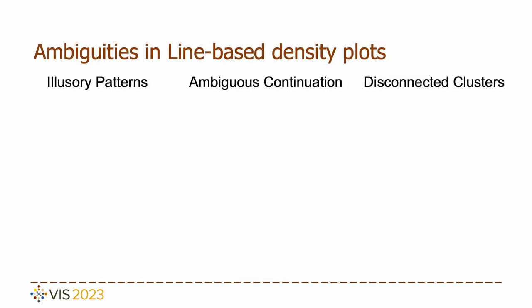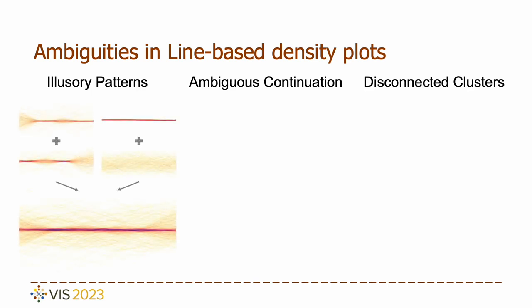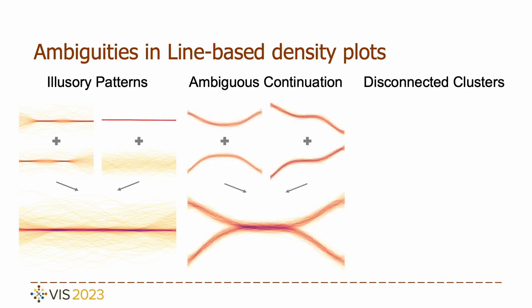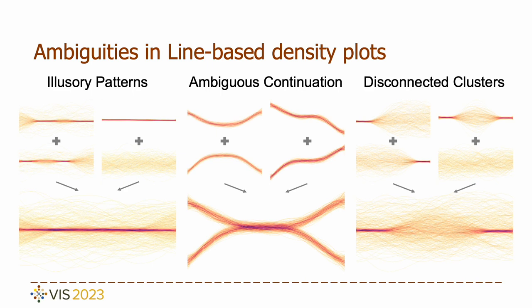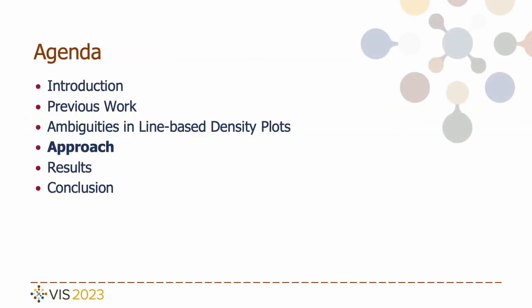When investigating line-based density plots of real-world datasets, several patterns with ambiguities are found. We grouped them into three basic types: illusory patterns, where a trend seems to be continuous but is created from diverging data; ambiguous continuation, where it is uncertain how a trend continues; and disconnected clusters, where it is unclear if and how clusters are connected. To understand how users perceive these ambiguous patterns, we conducted a motivational small-scale user study as detailed in our paper. To help reduce such ambiguities, we propose a novel coloring method for line-based density plots.